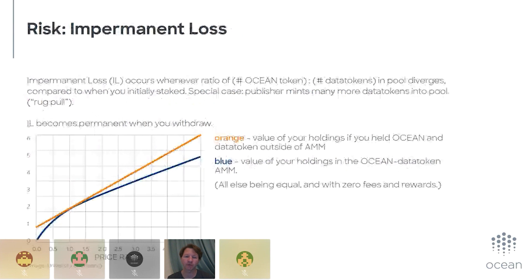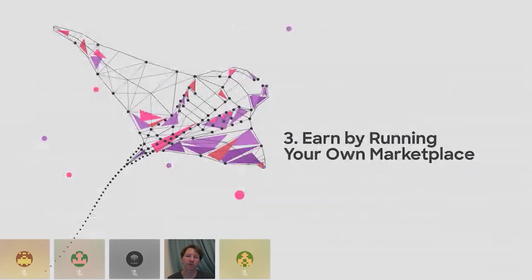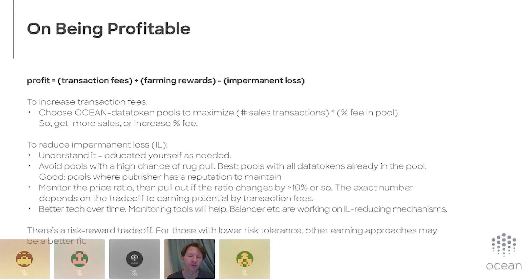Impermanent loss is covered more in the blog post. Basically, if the ratio changes a lot, you can lose. On being profitable: your transaction fees and farming rewards need to exceed what you would have lost from impermanent loss, and there are tactics around that covered in the Ocean staking blog post. Overall, it's worth mentioning this is a risk-reward trade-off. If you're uncomfortable with staking, that's okay — there are other approaches, like selling data, which doesn't run these risks. It's just a question of finding the data.